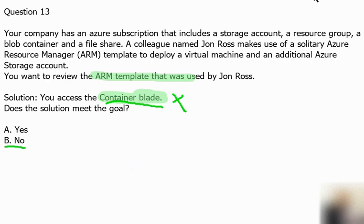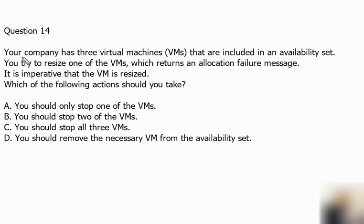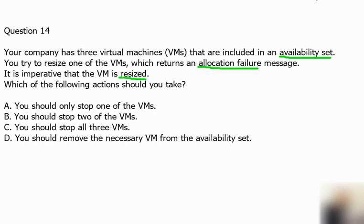Let's move to question number 14. Your company has three virtual machines that are included in an availability set. You try to resize one of the virtual machines, which returns an allocation failure message. It is imperative that the VM is resized. Which of the following actions should you take?